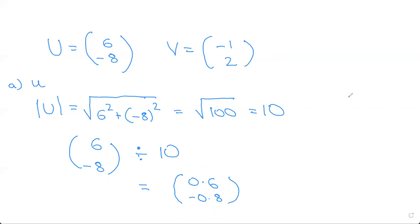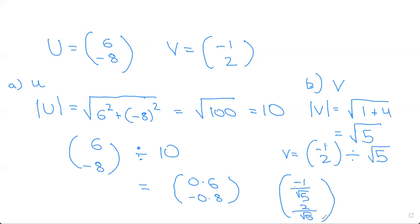If they ask us to find the same thing but in the direction of v, we first find the magnitude of v which is root of (-1) square which is 1, and 2 square which is 4, so this equals root 5. We know that v is (-1, 2), so we divide this by root 5. You don't have to make this in decimals, you can leave it as (-1/√5, 2/√5). This is the unit vector in the direction of v.